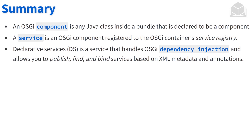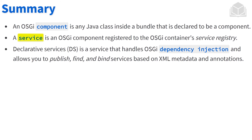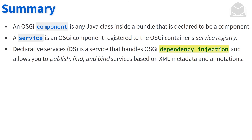A quick summary: an OSGi component is any Java class created inside a bundle that is declared to be a component using the @Component annotation. A service is an OSGi component registered to the OSGi container's service registry. Declarative Services (DS) is a service that handles OSGi dependency injection and allows you to publish, find, and bind services based on XML metadata and annotations — we'll be more focused on the annotations. That wraps it up for components and services. In the next series of videos, we'll handle an exercise to further solidify these concepts.